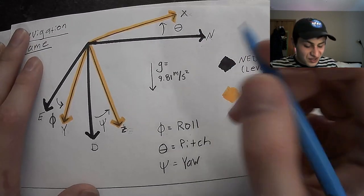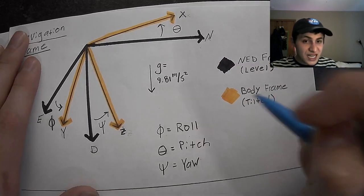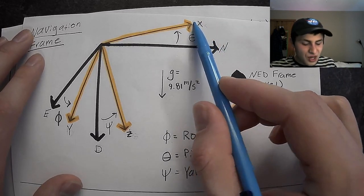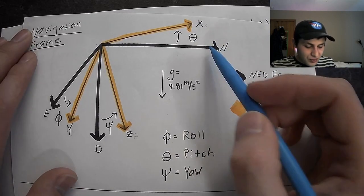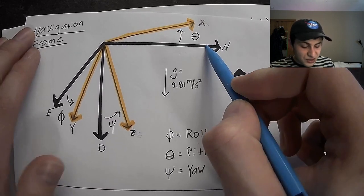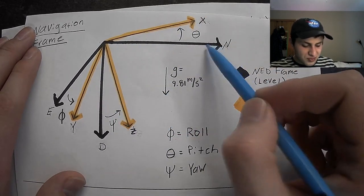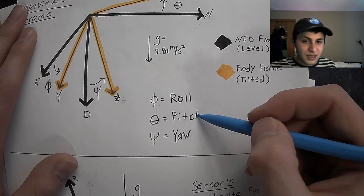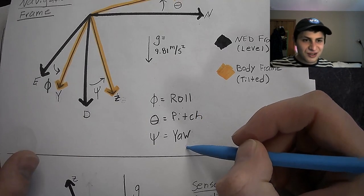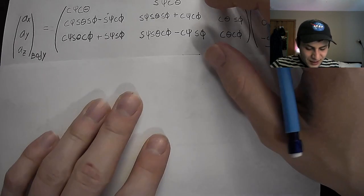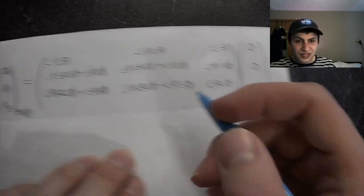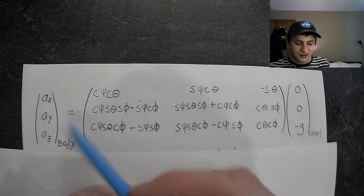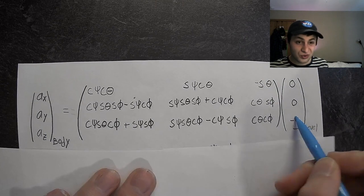In flight dynamics and controls, we use rotation matrices — also called direction cosine matrices — to describe the orientation of one coordinate frame with respect to another. We are going to use a rotation matrix to describe the orientation of our accelerometer with respect to the North-East-Down frame, and that rotation matrix is going to be defined by our roll, pitch, and yaw angles. This is the rotation matrix that describes our accelerometer's orientation with respect to the level North-East-Down frame.